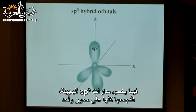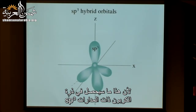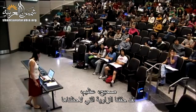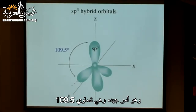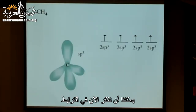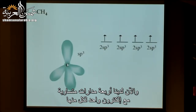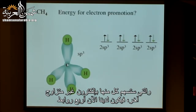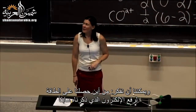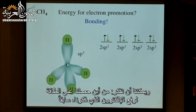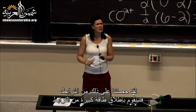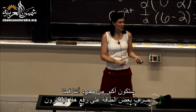In terms of sp3 hybrid orbitals, if we combine all four together, the angle is 109.5 degrees — which is exactly what we observe. So we've achieved the correct geometry. Now we have four equal orbitals with one electron each, and we can bring in four hydrogen atoms, each contributing another unpaired electron, to form four bonds. The energy for electron promotion comes from bonding — we release a lot of energy from bond formation, which more than makes up for the energy spent promoting that electron from 2s to 2p.